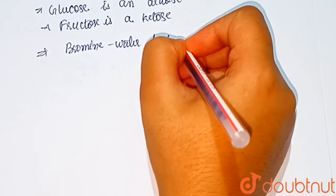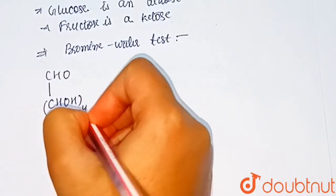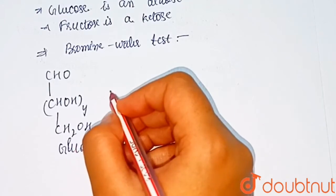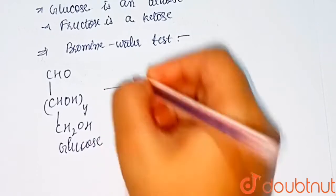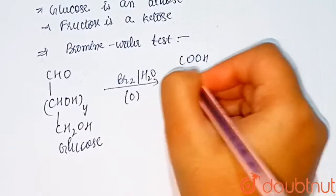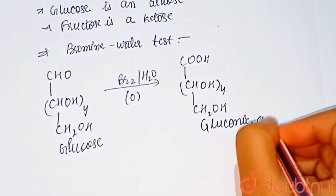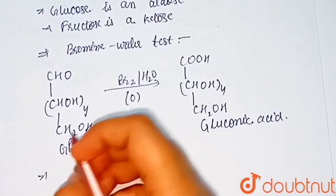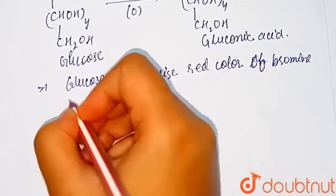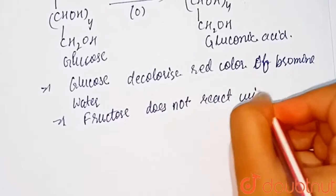Glucose decolorizes the red color of bromine water — it is oxidized to gluconic acid on adding bromine water. So glucose decolorizes the red color of bromine water. On the other hand, fructose does not react with bromine water.